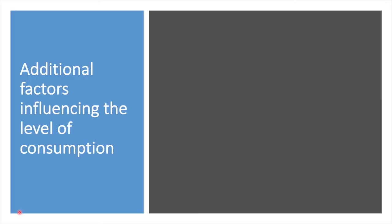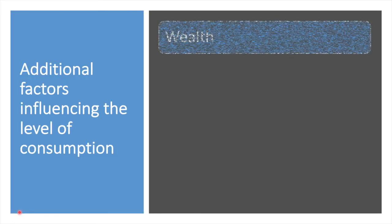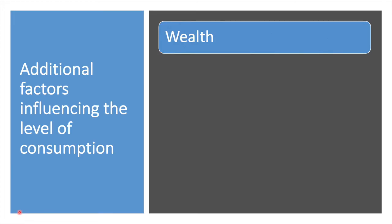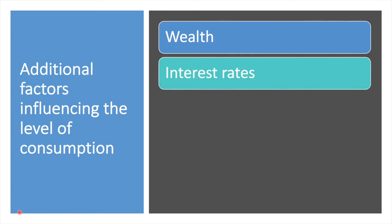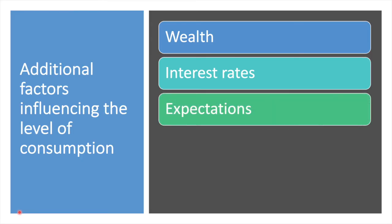Beyond income, there are several other factors that influence the level of consumption. First is wealth — if households feel wealthier, they are more likely to spend. When house prices appreciate, homeowners may feel wealthier and make more purchases. Interest rates are the cost of borrowing and the reward for saving. If interest rates fall, consumption is likely to increase as borrowing becomes cheaper, saving less attractive, and repaying debt with an adjustable rate becomes easier. Third, if consumer expectations are quite positive, consumption is likely to be higher. If consumers fear a recession or experience a pandemic, their spending habits are likely to be more conservative as they plan for uncertainty.